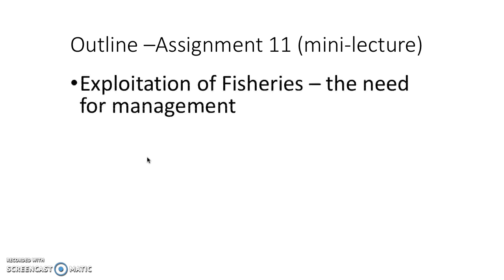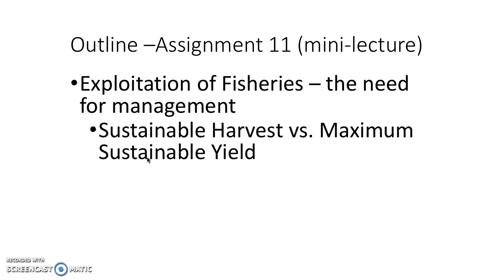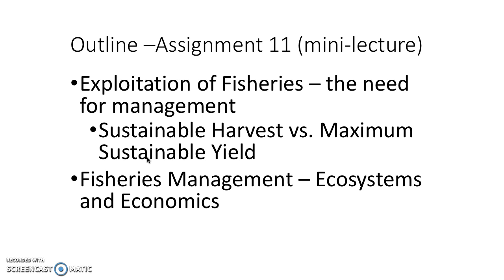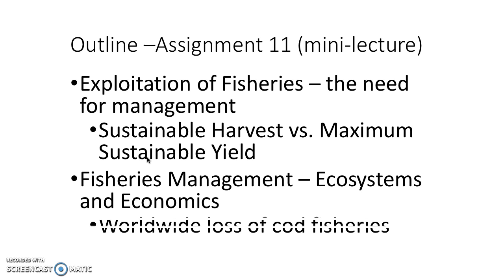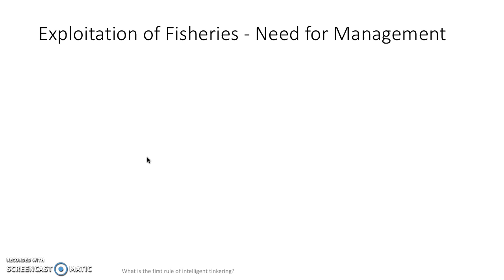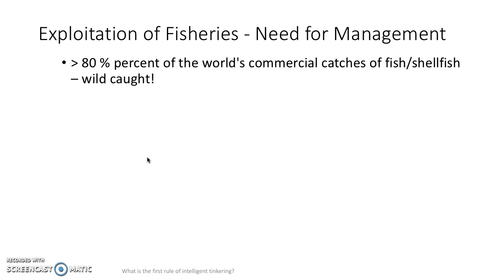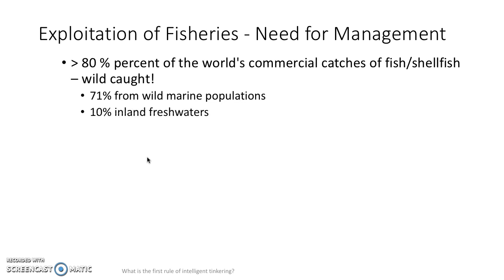Exploitation of fisheries and the need for management is part of what we're talking about in this assignment. Sustainable harvest versus maximum sustainable yield — two concepts. Sometimes fisheries management takes the ecosystem approach and sometimes it doesn't. But what happens to economies or economics of those villages that depend upon fisheries and their harvest? Greater than 80% of the world's commercial catch of fish and shellfish are wild-caught. Most of that fish you could buy in the store is not grown on a farm — 71% comes from wild marine populations, and 10% obviously comes from inland fresh waters.